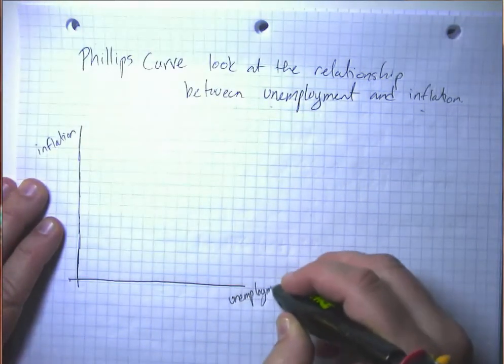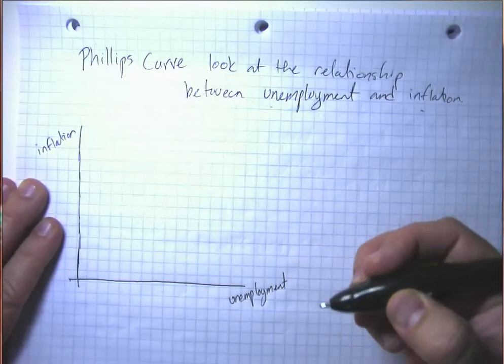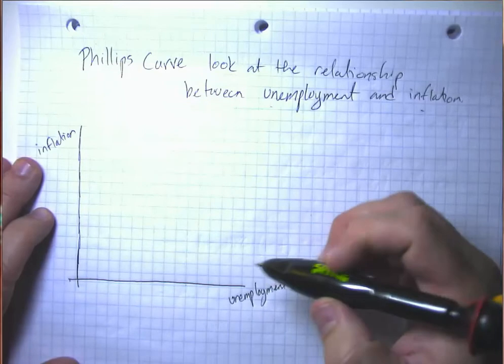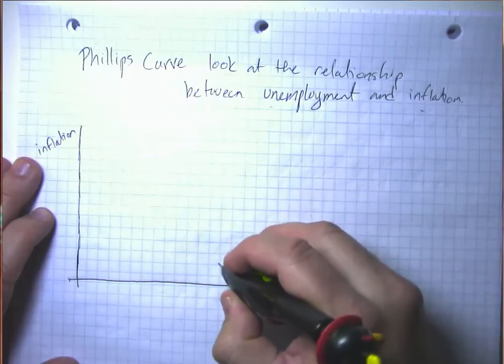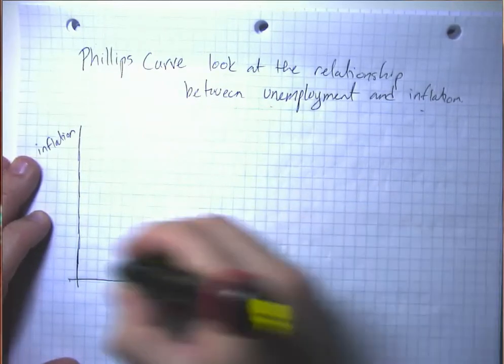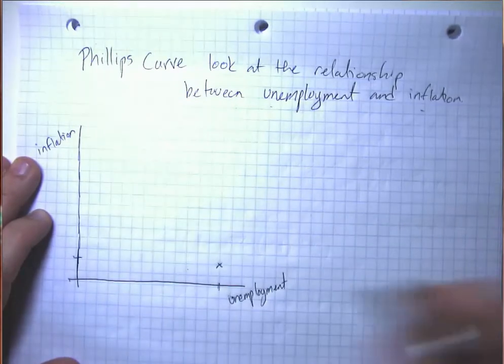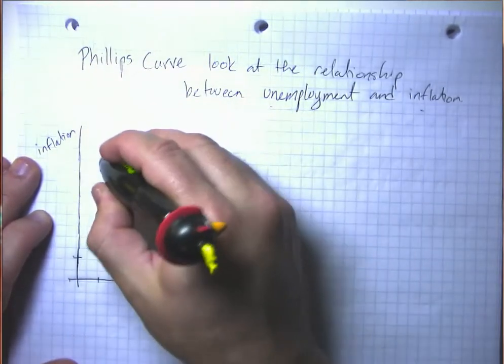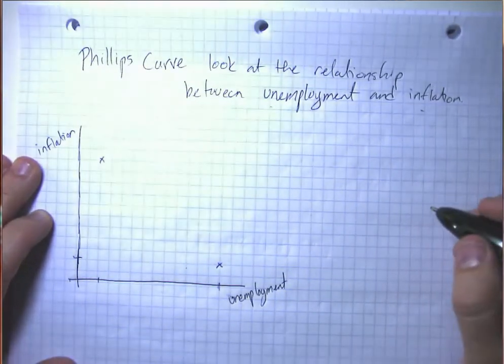And in particular, what people noticed was when we had relatively high unemployment, we tended to have relatively low inflation. And when we tended to have relatively low unemployment, we tended to have relatively high inflation.